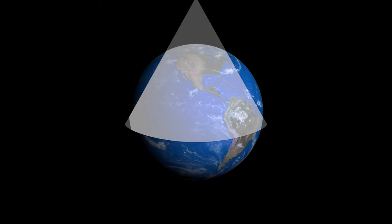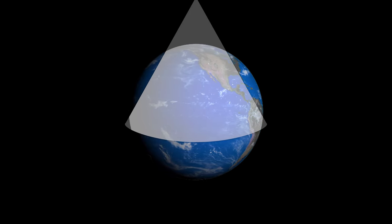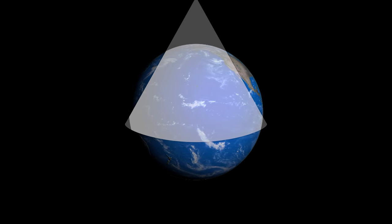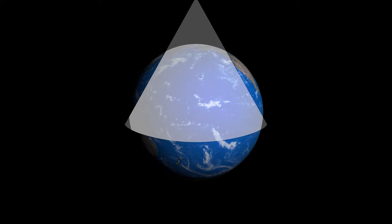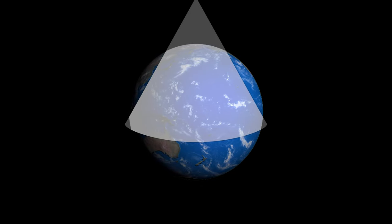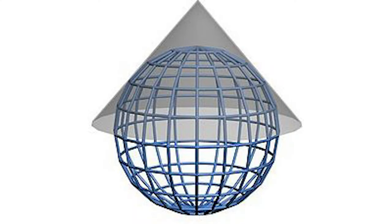Albers Equal Area Conic Projection Distortion. Like all projections, the Albers Equal Area Conic has map distortion. Distances and scale are true only on both standard parallels, with directions being reasonably accurate. Areas are equal to their size on Earth, though it's not conformal, perspective, or equidistant.